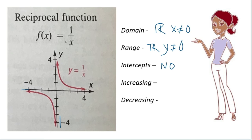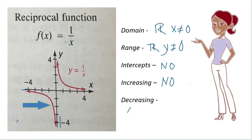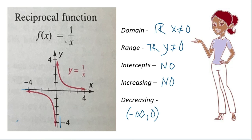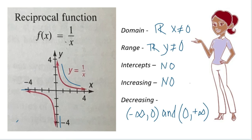Is it increasing? Looking from the bottom going to the top, there is no increasing. It is decreasing: on one side we have negative infinity going towards zero (not including zero), and on the other side we have zero (not including zero) going to positive infinity. That is our reciprocal or rational function parent function.